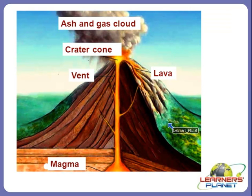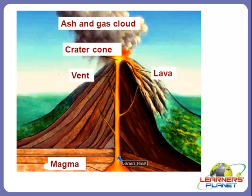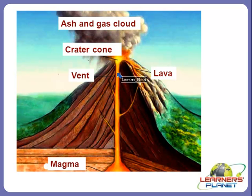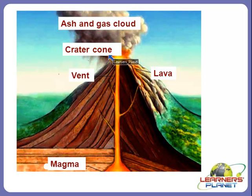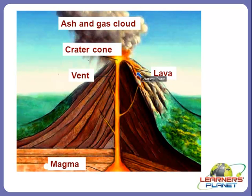Here is a picture of a volcano. First, the magma chamber is where magma is formed. From there it makes a narrow vertical tunnel and rushes upwards through what is known as a vent. After that it makes a hollow crater at the top known as a crater cone. When it comes out it is known as lava, and it also releases ash and gas cloud.